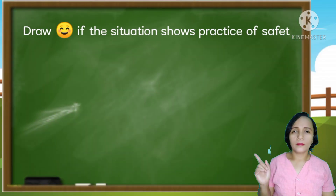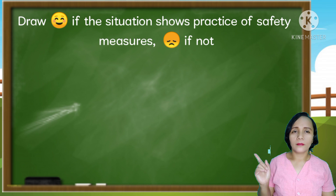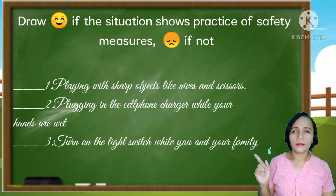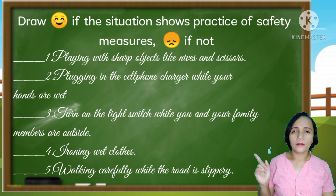Before we go further to our lesson today, let's have a short review. Draw a happy face if the situation shows the practice of safety measures and a sad face if not. 1. Playing with sharp objects like knives, scissors, and others. 2. Plugging in the cell phone charger while your hands are wet. 3. Turning on the light switch while you and your family members are outside. 4. Ironing wet clothes. 5. Walking carefully while the road is slippery.